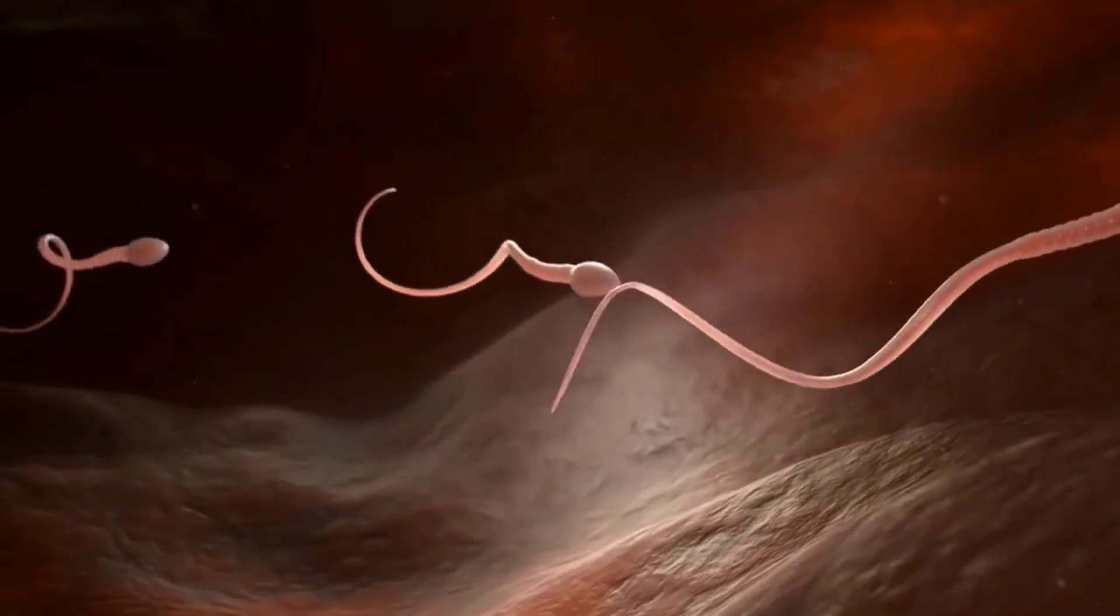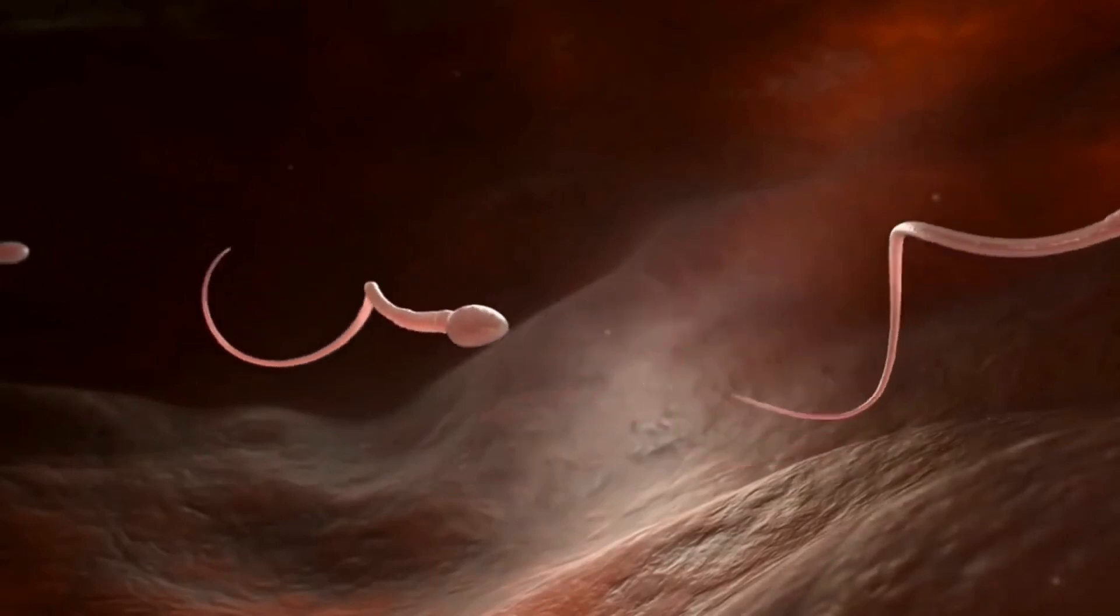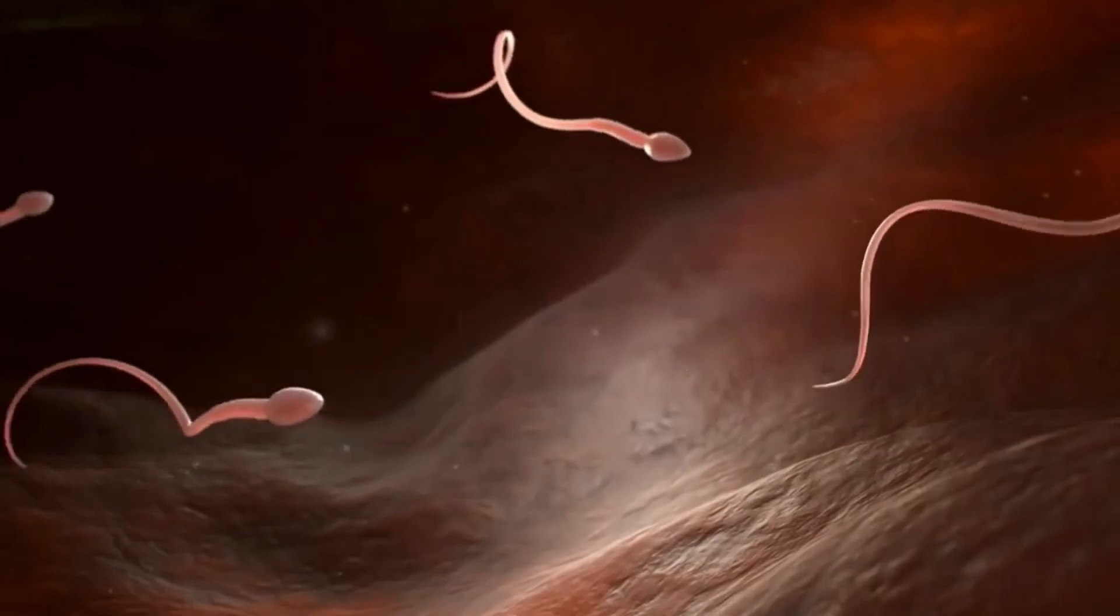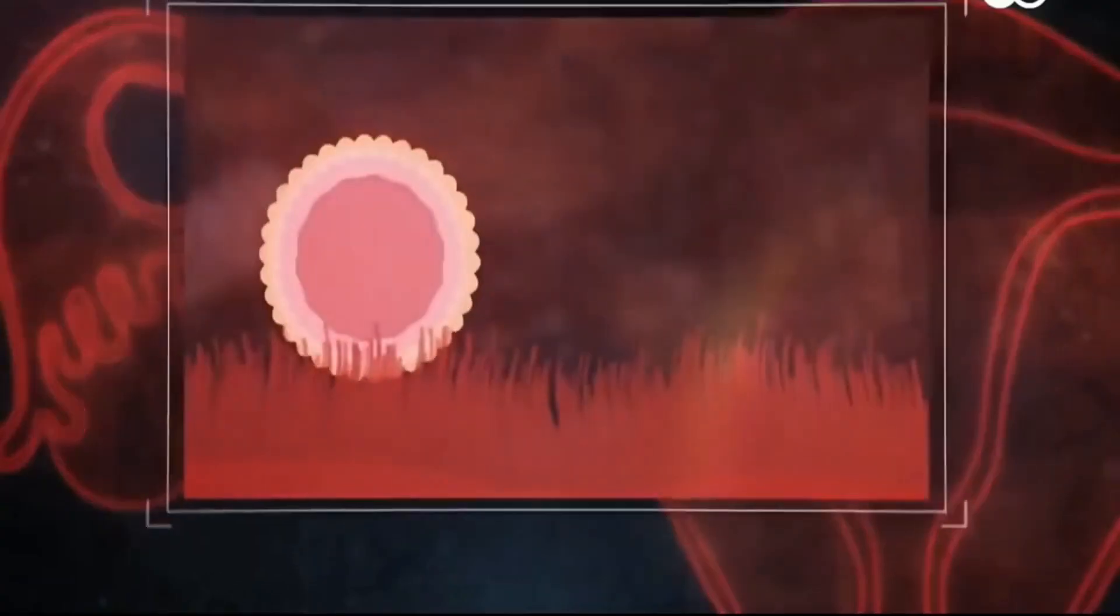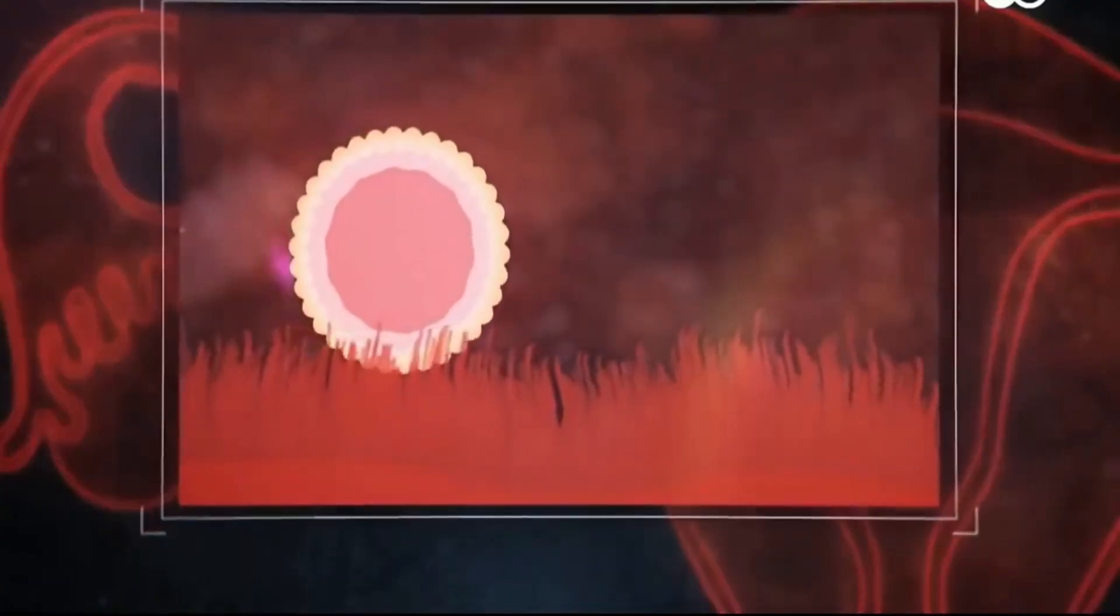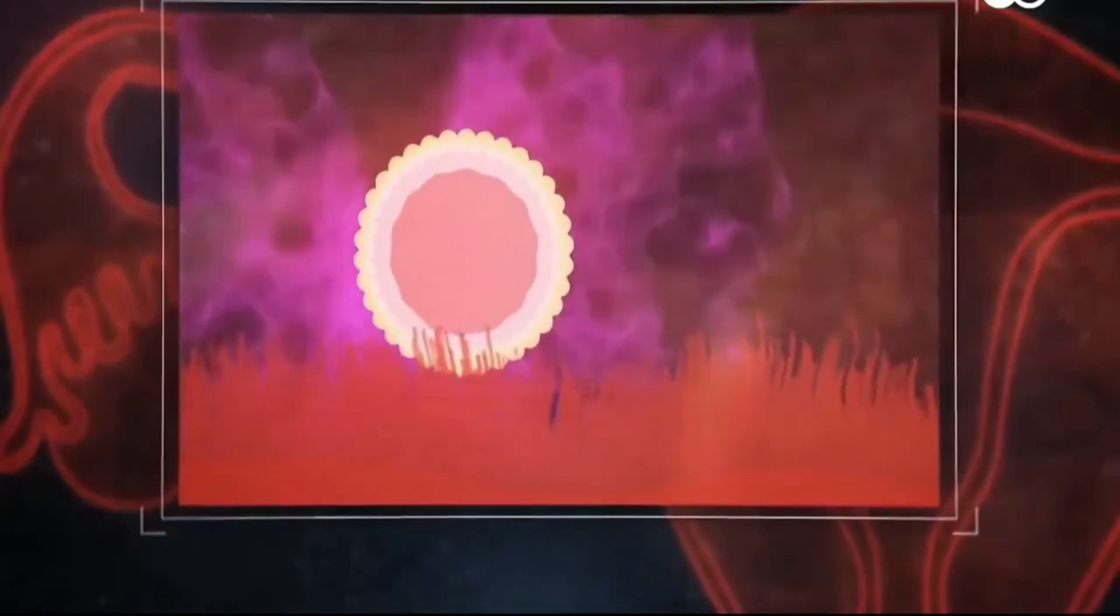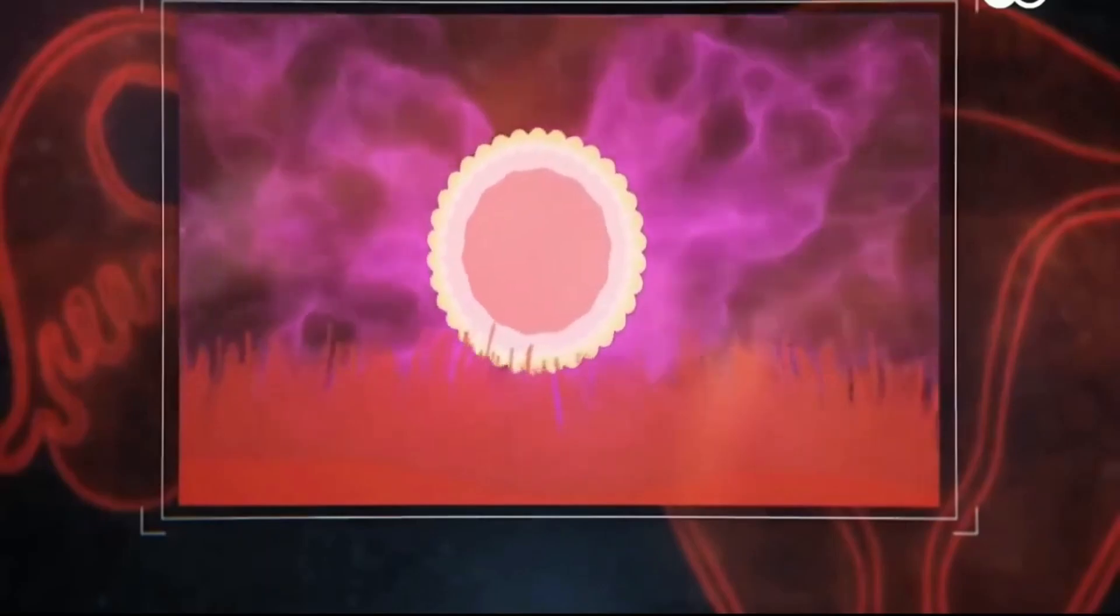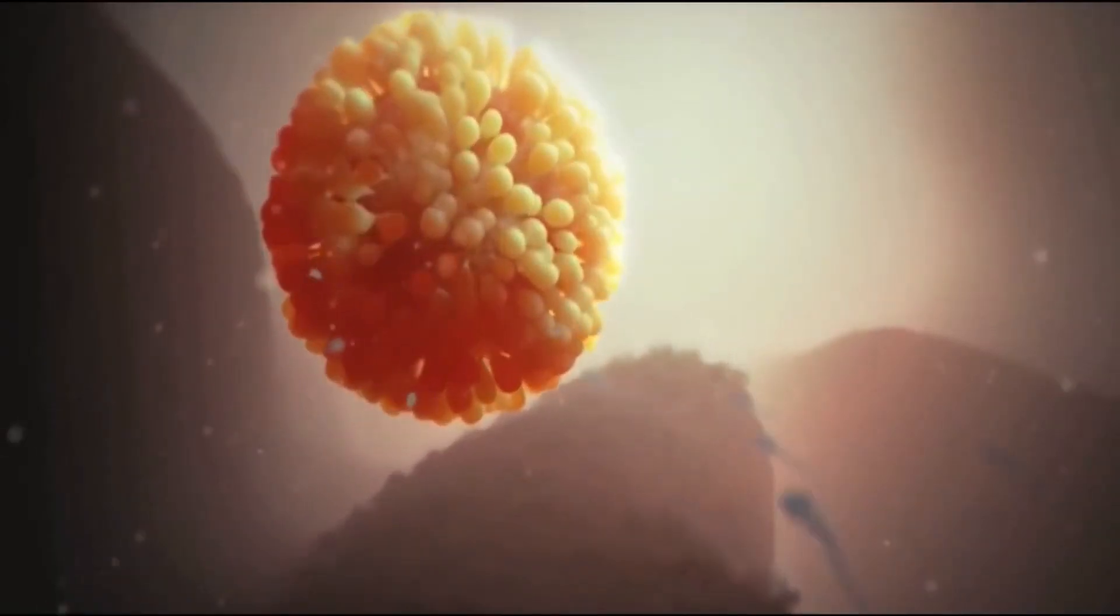At long last, the sperm reach the egg. Only a few dozen of the original 300 million sperm remain. The egg is covered with a layer of cells called the corona radiata. The sperm must push through this layer to reach the outer layer of the egg, the zona pellucida.